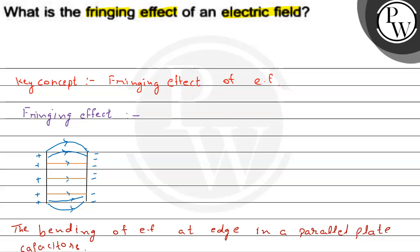So, fringing effect is the bending of electric field at the edge in a parallel plate capacitor.